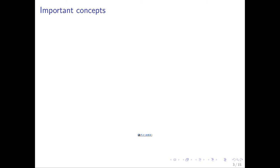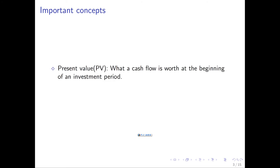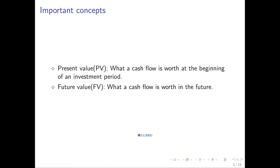Let's get started with the first topic — money has a time value. There are two important concepts. The first is present value (PV): what a cash flow is worth at the beginning of an investment period. The second is future value (FV): how much a cash flow will be worth in the future. For example, if I have $100 today and it's going to be worth $106 in a year, then $100 is the PV and $106 is the FV.